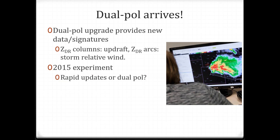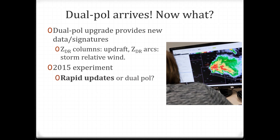There are also things like ZDR arcs, which give information about storm-relative wind as well as storm organization. During a 2015 hazardous weather testbed experiment I was involved in, I was interested in rapid update data like phased array radars as well as DualPol. So I started asking forecasters: would you sacrifice DualPol data in order to have rapid updates? Week after week, unanimously, the forecasters very quickly said yes.